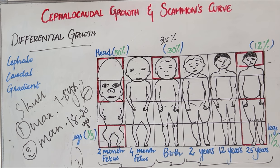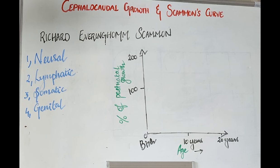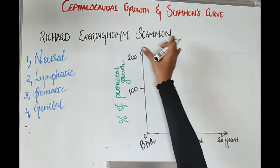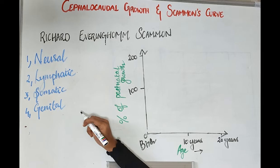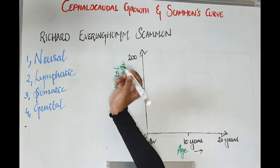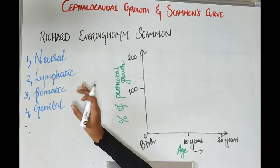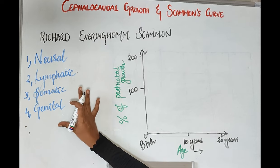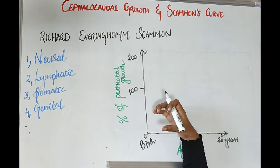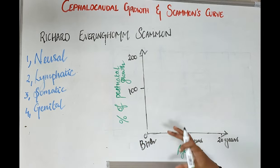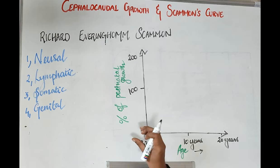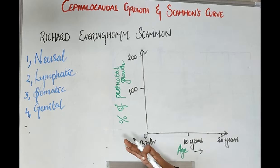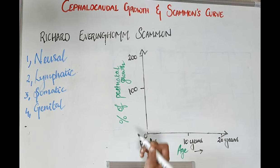Next, we'll be seeing about Scammon's growth curve, which was given by Richard Scammon. The human body mainly has four major tissues: neural tissue, lymphatic tissues, somatic or general tissue, and genital or sexual tissues. Scammon plotted the growth of these tissues at each age into a curve. On the x-axis we have the age groups, and on the y-axis we have the percentage of postnatal growth — that is, what percentage of adult size each tissue will reach.